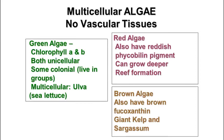The multicellular algae are often called seaweed, and these are algae, not plants — they're still in Kingdom Protista. They're not plants because they don't have vascular tissue. Plants have tube-like tissues called xylem and phloem that allow water, minerals, and food to move through the plant. Seaweeds do not have those, so they are not true plants.